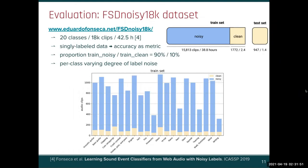We evaluate our approach using the FSDNoisy18k dataset, which consists of 20 classes, 80,000 clips, and over 40 hours of singly labeled audio data. This dataset was proposed to investigate label noise mechanisms, so most of the training set has noisy labels, whereas only a small subset is manually curated and reliable in terms of labels.